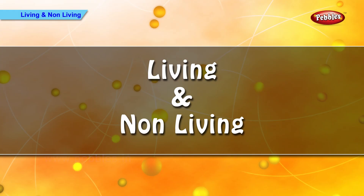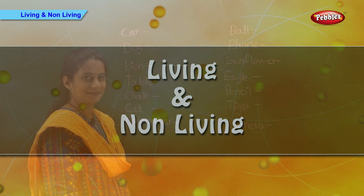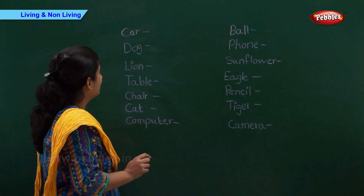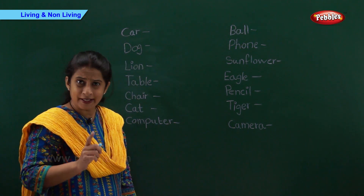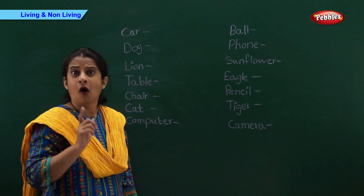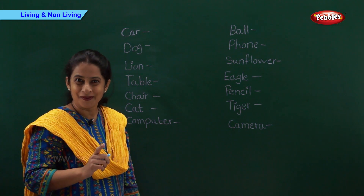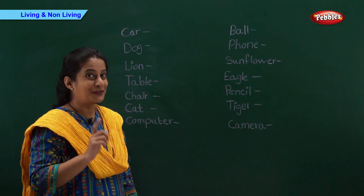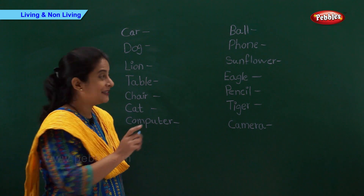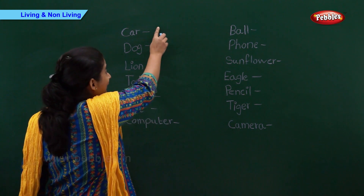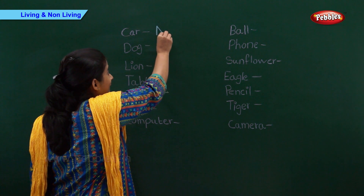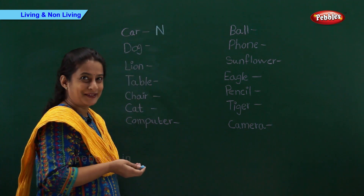Living and non-living things. Car. Can a car breathe or does a car grow? No. So let's write N. Car is a non-living thing.